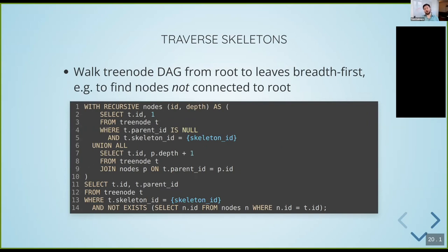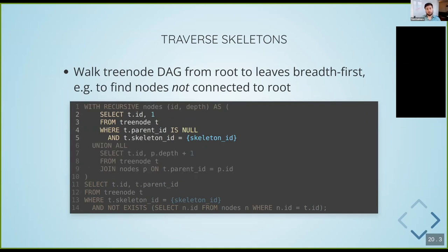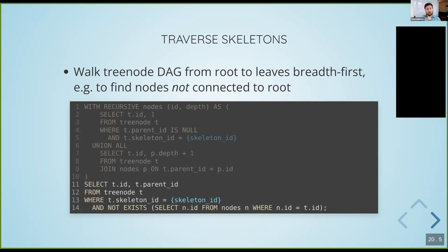We can also do things like recursively traversing a skeleton. This can be important, for instance, if we want to find disconnected fragments of a skeleton that are disconnected from a root node. An easy way to do this is to use Postgres's recursive common table expressions, which have a starting condition — like the root node of a particular skeleton — and a recursive part which is then executed in a breadth-first fashion to follow all child node connections from the last set of parent nodes. We use this to find all nodes that are disconnected from the set.